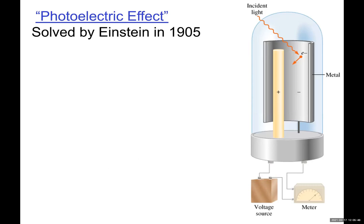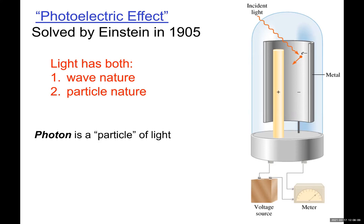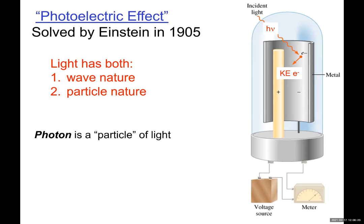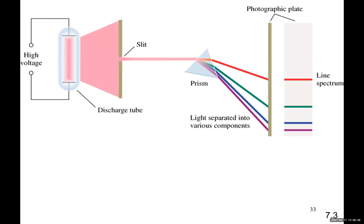So 1905, Planck and Einstein, they say light has both wave and particle nature. Dual property of light was accepted. So photons are particles of light, and light waves, they are doing interference. That means you see the pattern of brightness and darkness when two different lights are interfering together. So they are also waves.